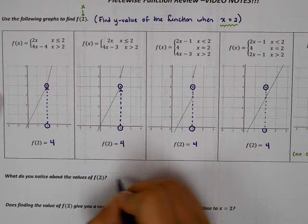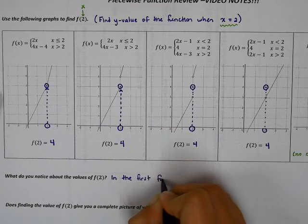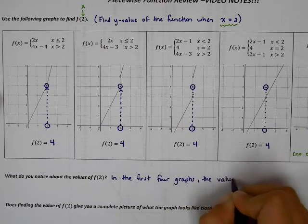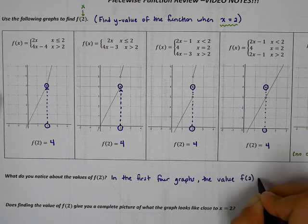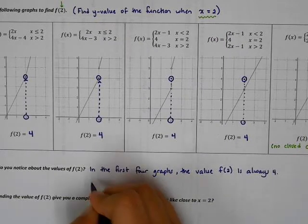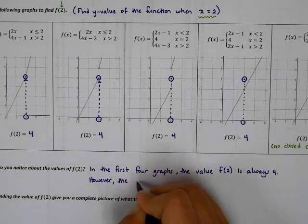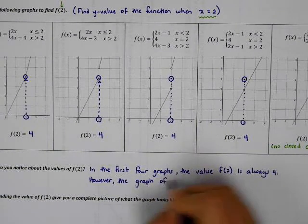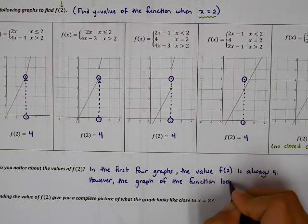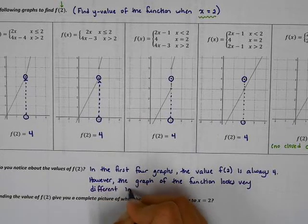So what do I notice? In the first four graphs, the value f of 2 is always 4. However, the graph of the function looks very different in each picture.